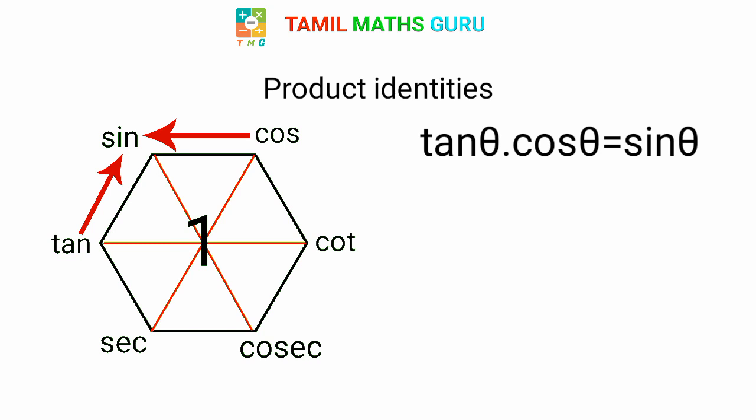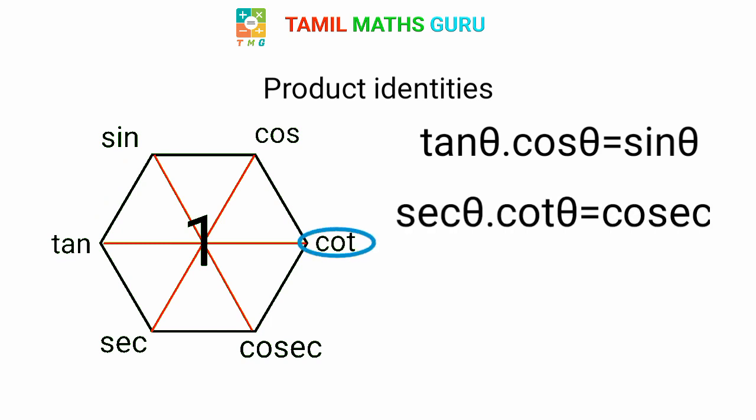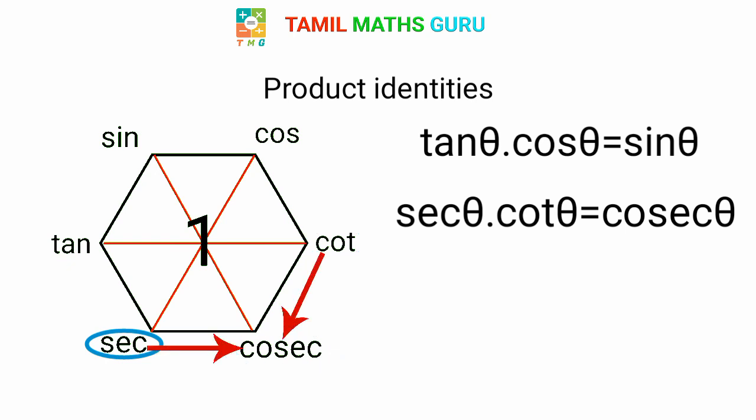We have three identities, and we multiply the middle ones. When we multiply the two identities and divide cosθ, we get cosθ into cosθ. So, secθ into cotθ is equal to cosecθ. That is, cotθ into secθ, or secθ into cotθ, is equal to cosecθ.